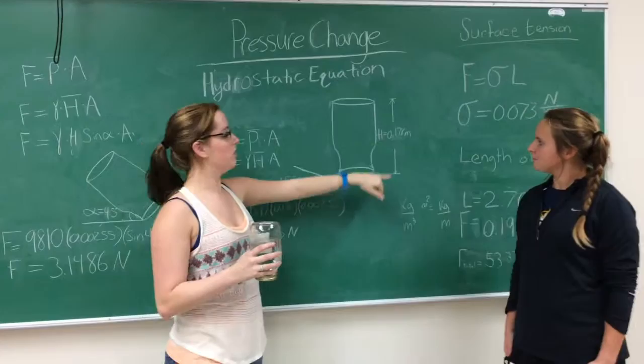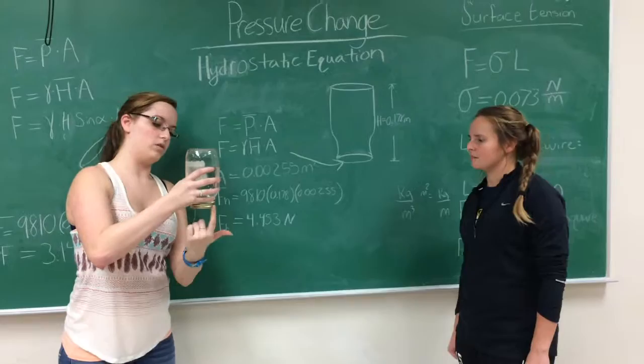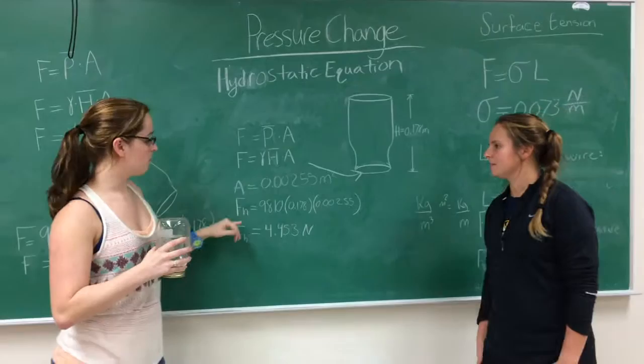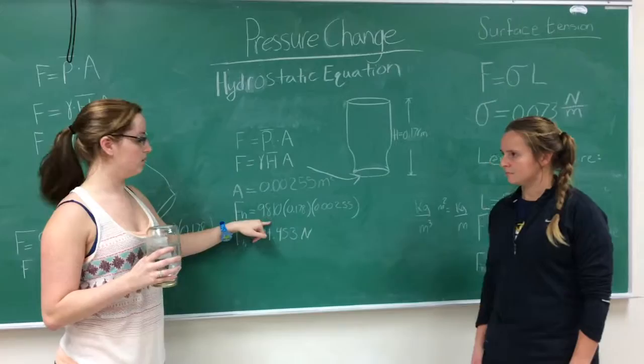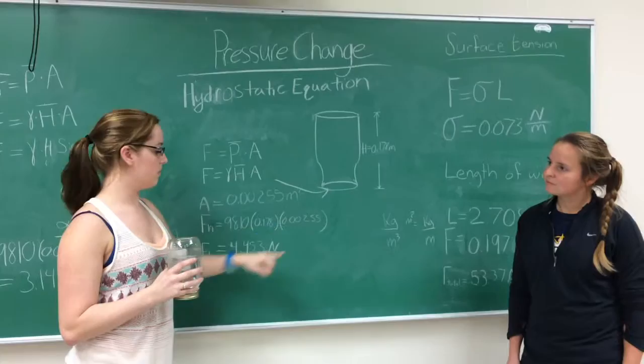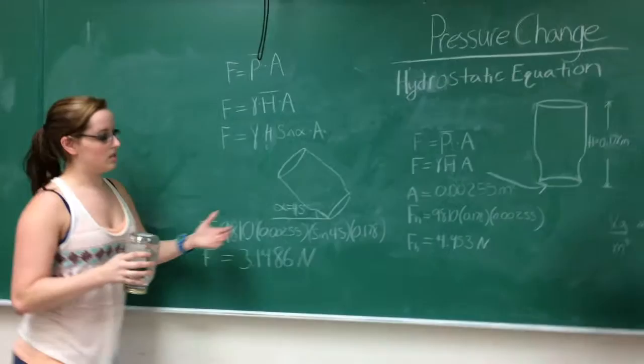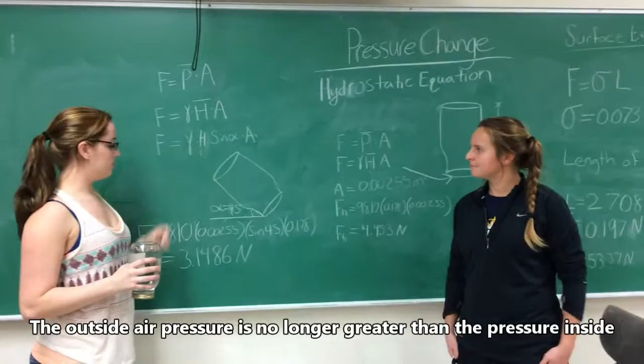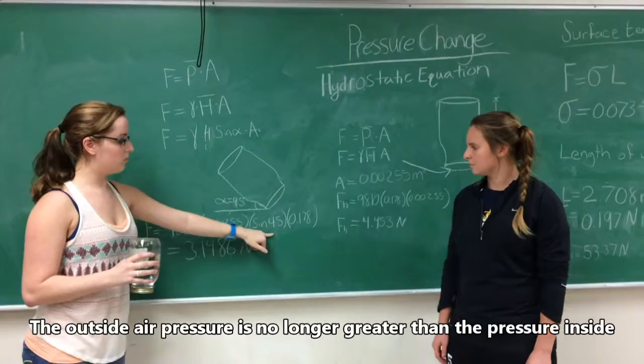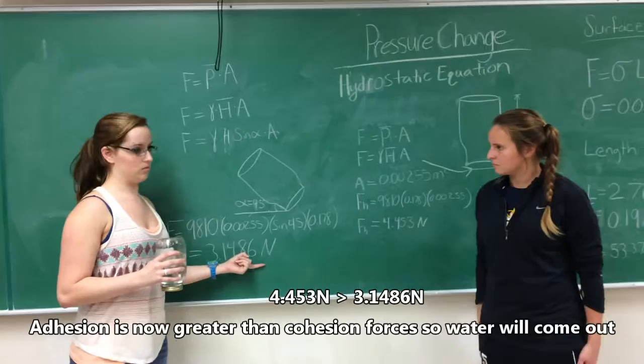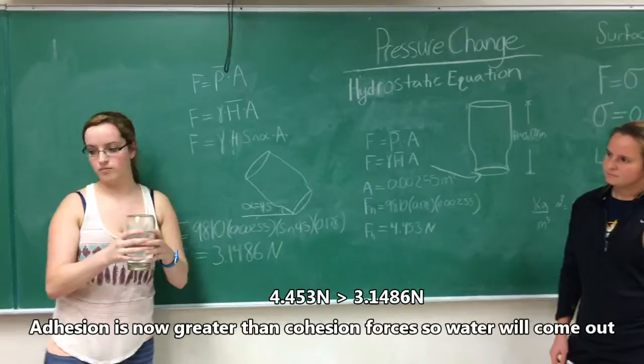The height from where the water is is 0.178 meters, and the area where the water is spilling out is 0.00255 meters squared. So the force equals gamma (9,810) times height (0.178) times area (0.00255), giving us 4.453 newtons. When you tilt it — say at a 45-degree angle — the new equation includes sin 45. So 9,810 times the area times sin 45 times the height gives us 3.1486 newtons, which is smaller than the original force, therefore the water leaks out and air replaces it.